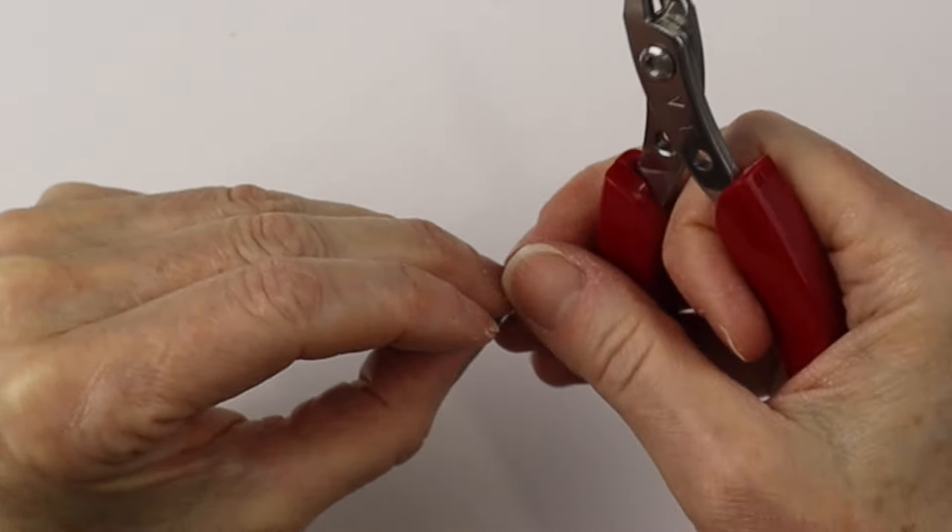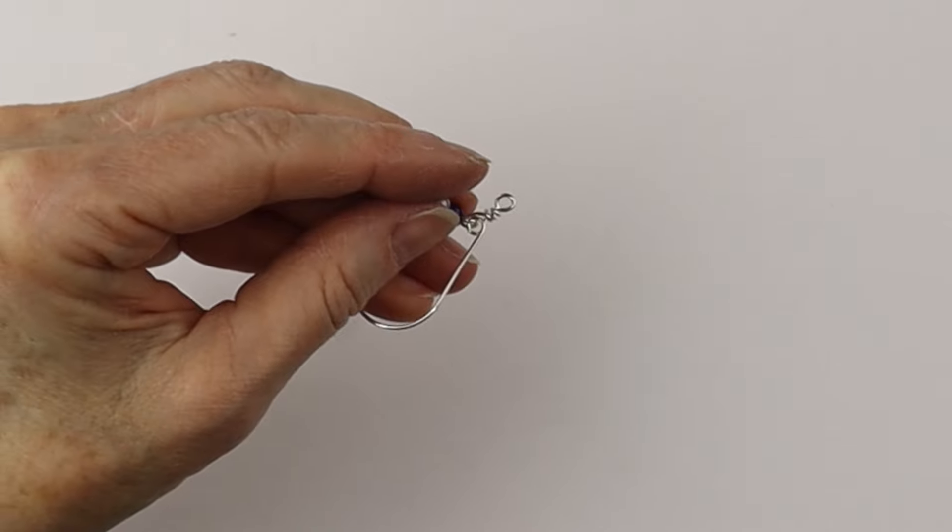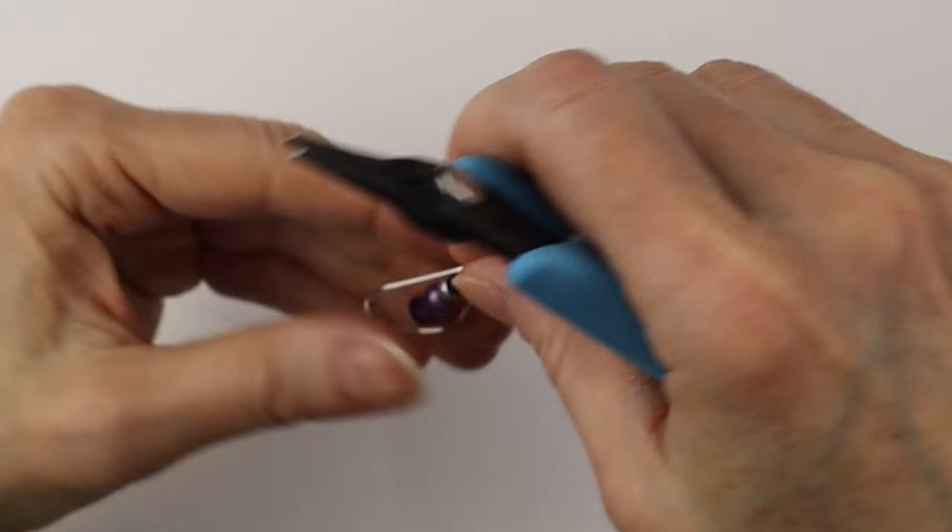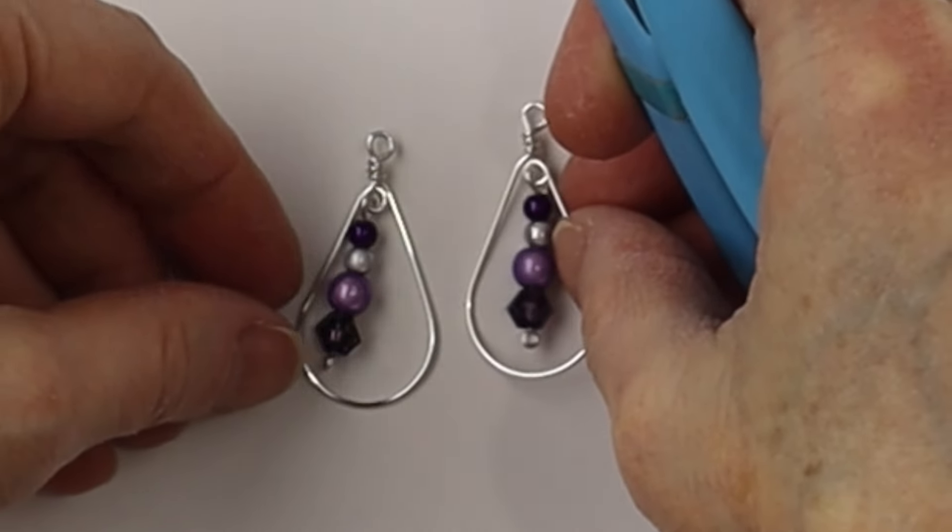Close up that wire. Adjust it as you need. Use the tweezer nose pliers to get in there and make sure there's no little pokey ends. So there's the teardrop and the pair with the earring hooks.